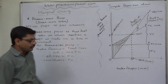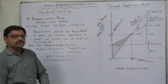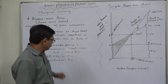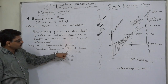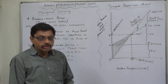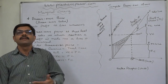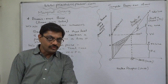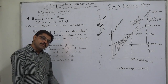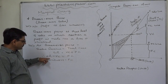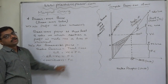At break-even point, sales revenue equals total cost. In marginal costing, total cost is segregated into two parts: variable cost and fixed cost. So total cost means variable cost plus fixed cost. At break-even point, sales revenue equals variable cost plus fixed cost. From sales revenue we first charge the variable cost in marginal costing analysis, and the excess of sales revenue over variable cost is known as contribution.